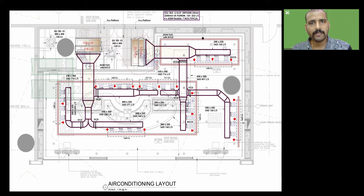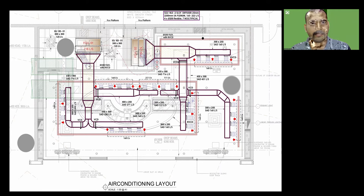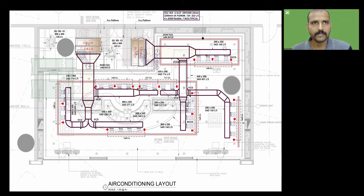Once the project has been awarded to a particular contracting company, we have to do the post-tendering activity or the final billing activity — we have to do quantity surveying. At the time of execution, the site team has to take the quantities from the shop drawings. Accordingly, only we will be raising the material requisition, then the site material will be arranged, and then we will be executing it.